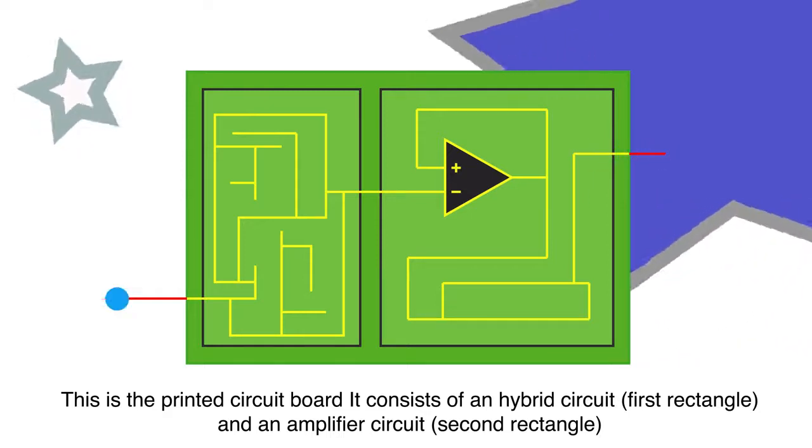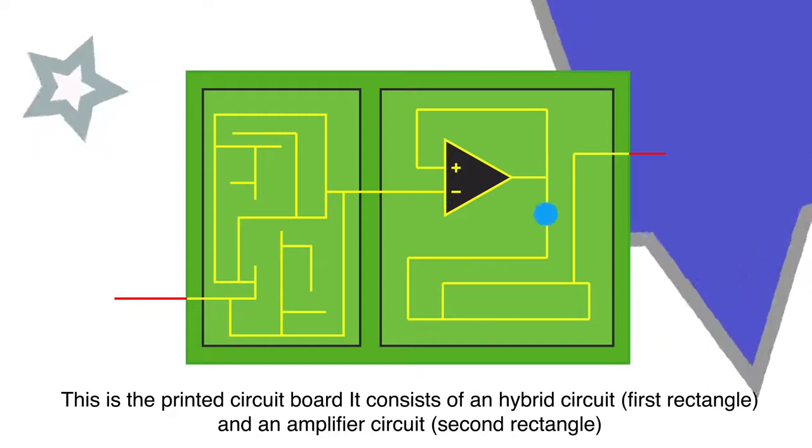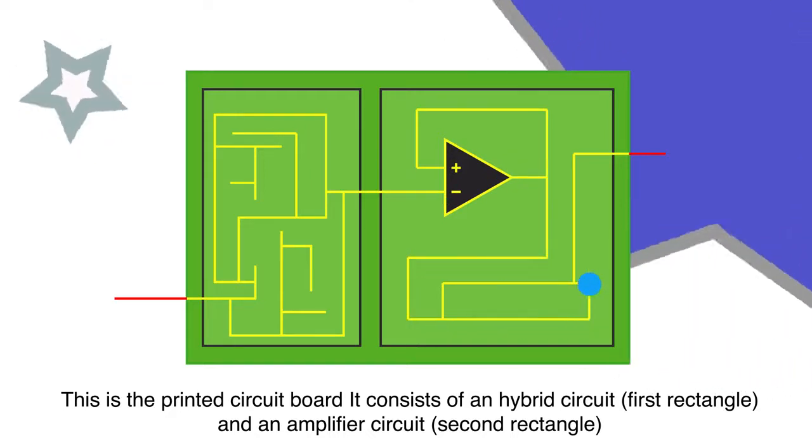This portion of the board then connects to the amplifier circuit. The amplifier circuit changes the current to a voltage as well as creates a gain, so that the signal is readable by an oscilloscope.